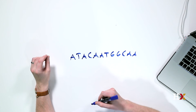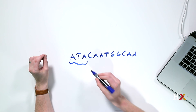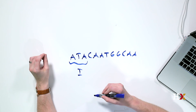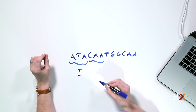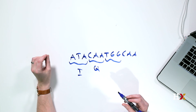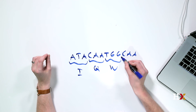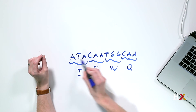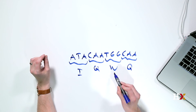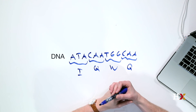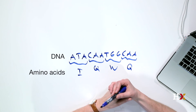Let's consider the following input sequence. How would you translate this sequence? First we identify the first triplet, which in this case is ATA — that corresponds to an I. We then move on to the next triplet, CAA, which corresponds to a Q, and so on. The third triplet, TGG, corresponds to W. And the final triplet, CAA, corresponds to a Q again. So our translation of this DNA sequence would be I, Q, W, Q. The top line in this example corresponds to our DNA sequence, and the bottom line corresponds to our sequence of amino acids.